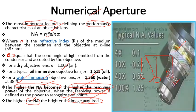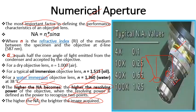The numerical aperture values for different objective lenses are: for 4x — NA = 0.1; for 10x — NA = 0.25; for 40x — NA = 0.65; and for 100x — NA = 1.25.